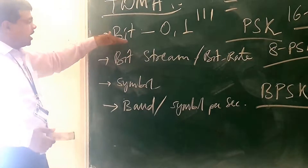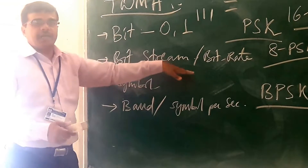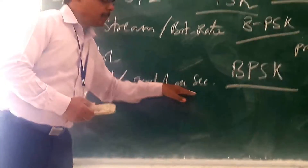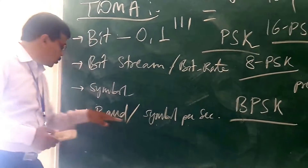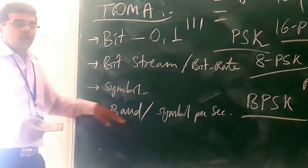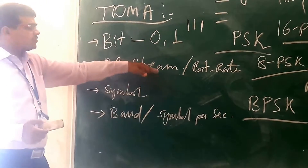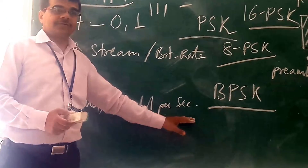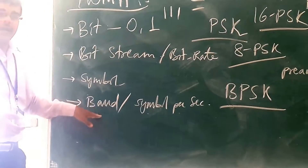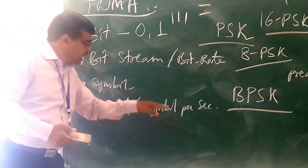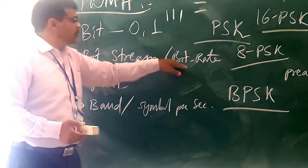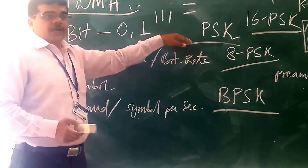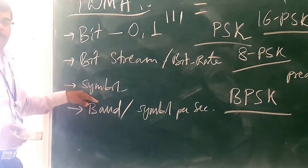Something called symbol. Here you are going to have bit rate, and here you are going to have symbol. What is the symbol? Symbol per second — it is also known as baud. So we will say this as bit rate, and this we will say as baud rate. What is your baud rate? Baud rate is symbols per second. What is your bit rate? Bit rate is bits per second. Let us see what is the difference between your bit and symbol.